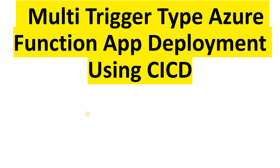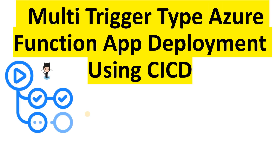In this video I will show you how to deploy a multi-trigger type Azure Function app using GitHub Actions CI/CD. The source code will be sitting on a GitHub repository, and I will show you how to write the GitHub Actions workflow which will do an Azure Function app deployment hosting multi-trigger type Azure functions.